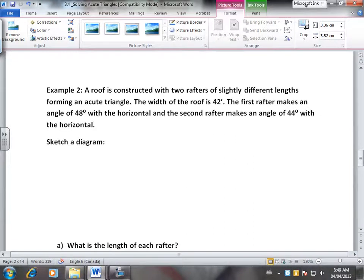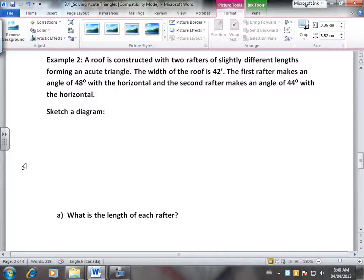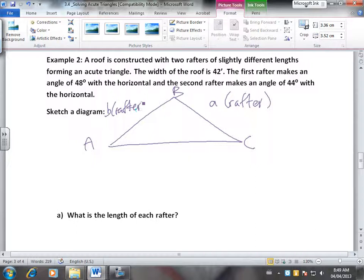So let's look at this example. A roof is constructed with two rafters of slightly different lengths forming an acute triangle. The width of the roof is 42 feet. The first rafter makes a degree of 48 degrees with the horizontal, and the second rafter makes an angle of 44 degrees with the horizontal. Sketch a diagram. So we're just going to draw a roof. So this would be your, and we'll just label this triangle ABC.